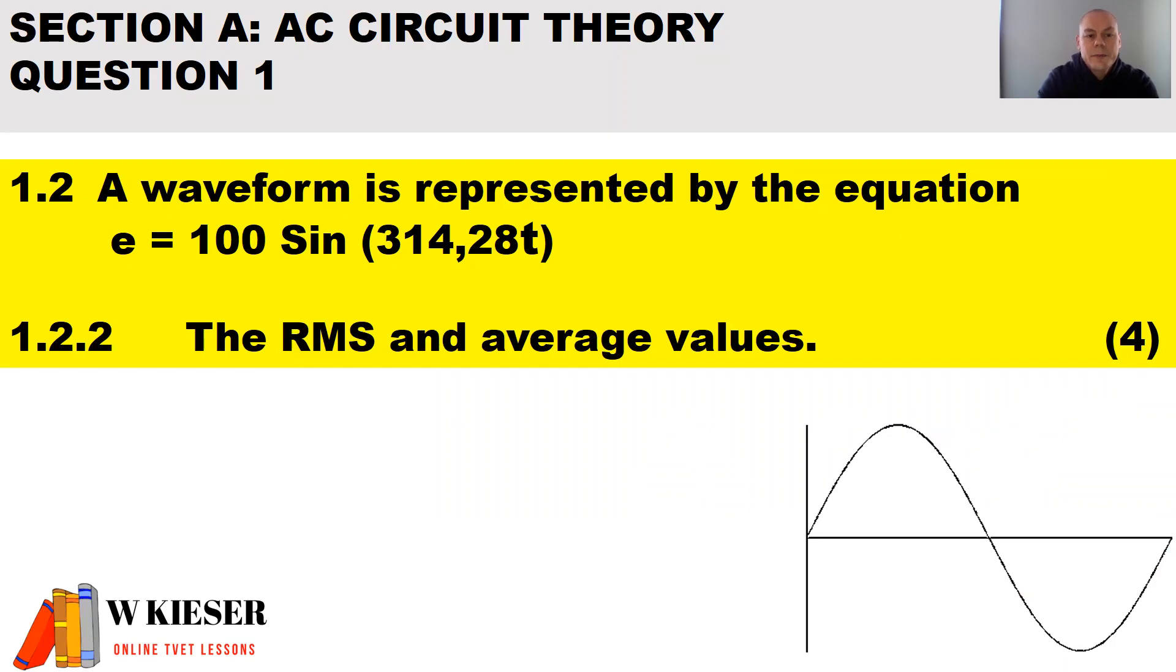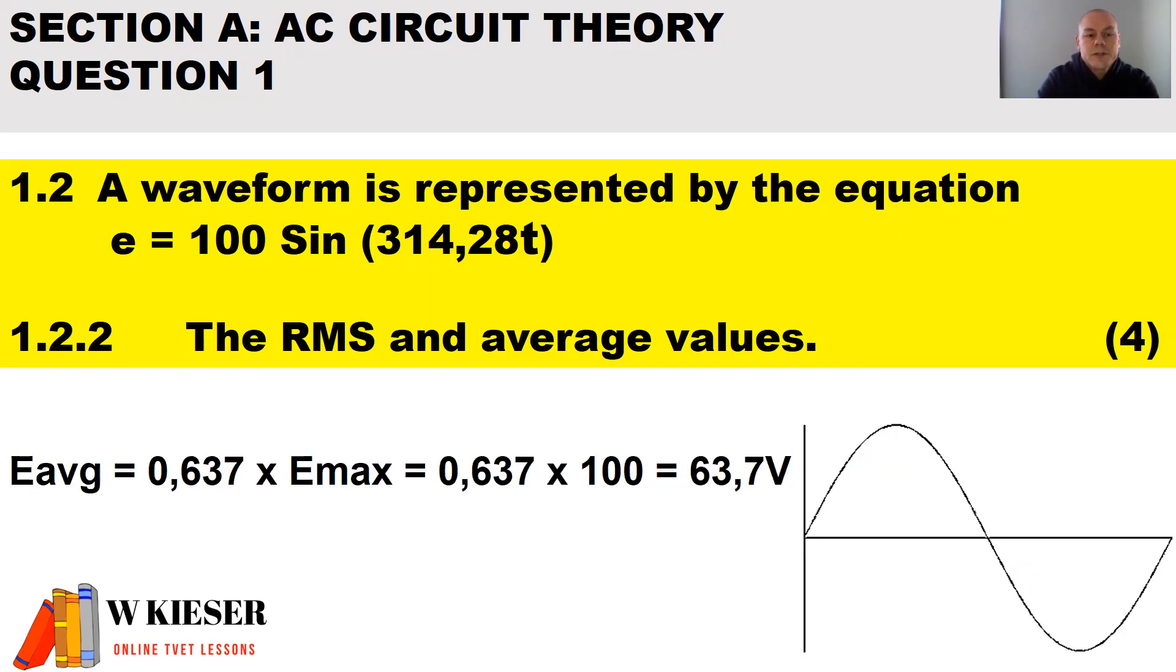In the second part of this question, for four marks, we determine the RMS and average values. To determine the RMS value, it will be 0.707 multiplied by the maximum value, therefore the RMS will be 70.7 volts. To determine the average value, it will be 0.637 multiplied by the maximum value, which gives us 63.7 volts.